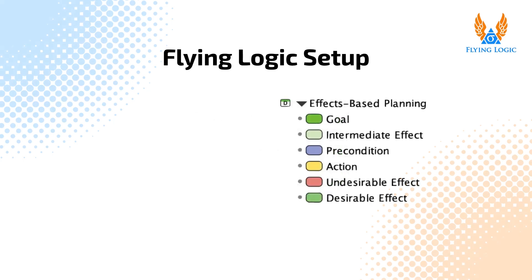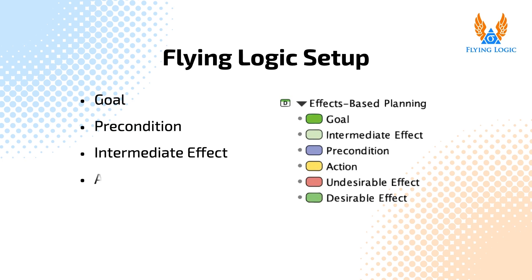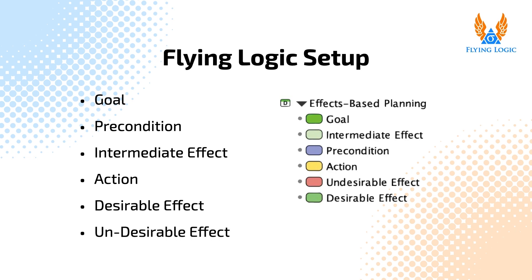Transition trees are created using the entity classes in the built-in effects-based planning domain, and primarily use the following classes: Goal, Precondition, Intermediate Effect, and Action. You can also use Desirable Effect entities to highlight other benefits of your plan, and Undesirable Effect entities if your sequence of actions causes unavoidable undesirable effects that further parts of the execution plan must address.